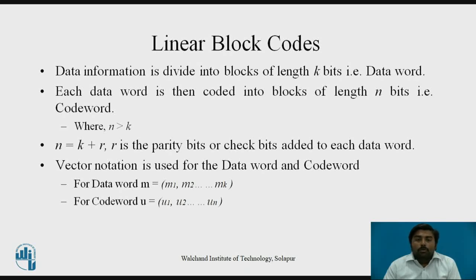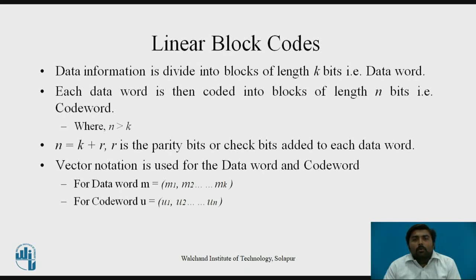These parity bits are used to check and correct errors at the receiver side. There are vector notations used in linear block codes. For data words, m is represented as a row vector m1, m2, up to mk. For the code word, it is similarly a row vector u1, u2, up to un, since the code word has length n.